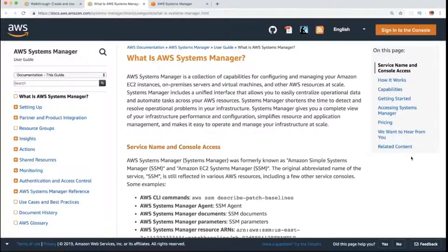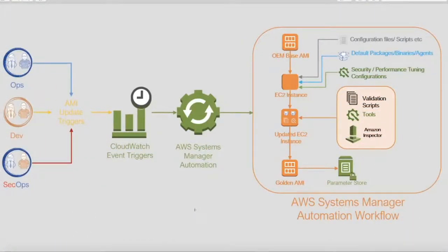Hi friends, in this video we will look at AWS System Manager. AWS System Manager is used to configure and manage a collection of EC2 instances. For example, if you have 100 EC2 instances in a shopping website application, AWS System Manager allows you to execute a shell script or command on all 100 EC2 machines at once.